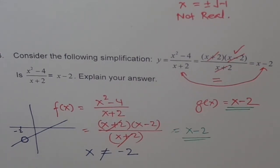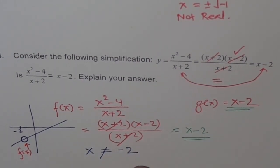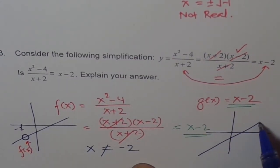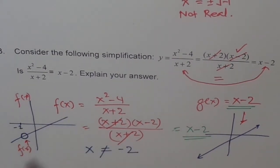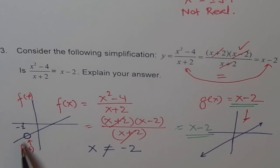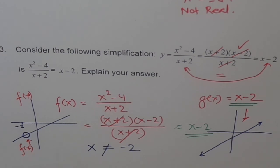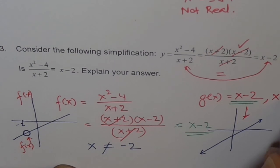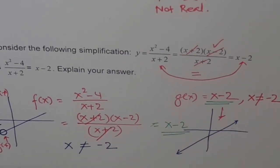f(x) graphs as a line similar to x − 2, except for one difference: a hole at x = −2. This hole exists because the common factor (x + 2) in numerator and denominator got cancelled. So the expression may simplify to x − 2, but it is not exactly the same unless we explicitly state x ≠ −2. With that restriction stated, both functions are exactly the same — otherwise, they are not.